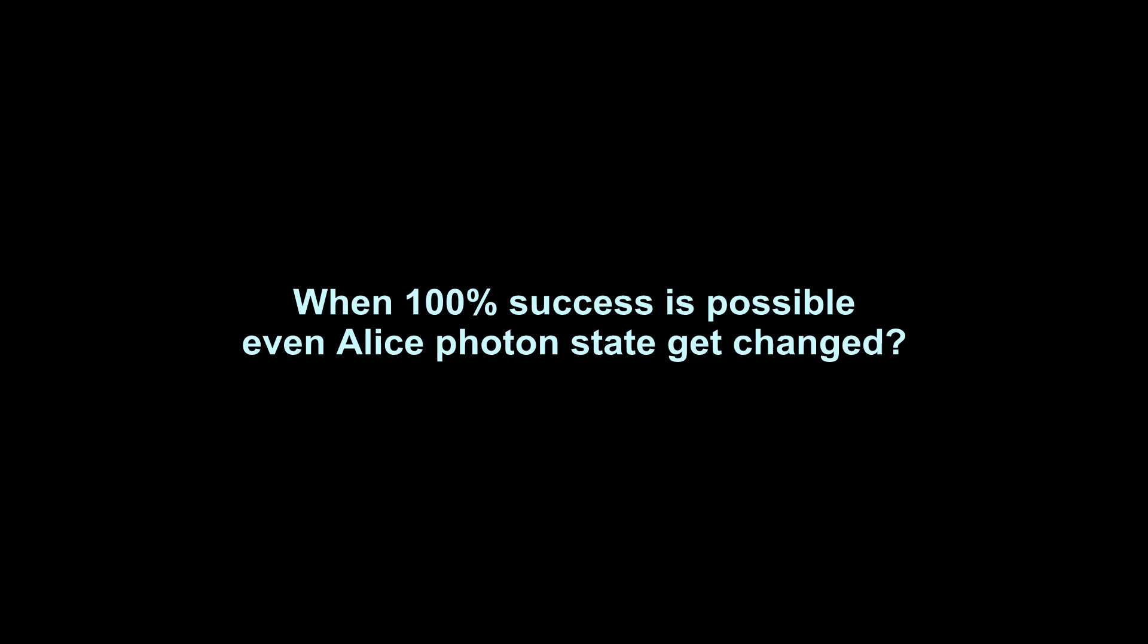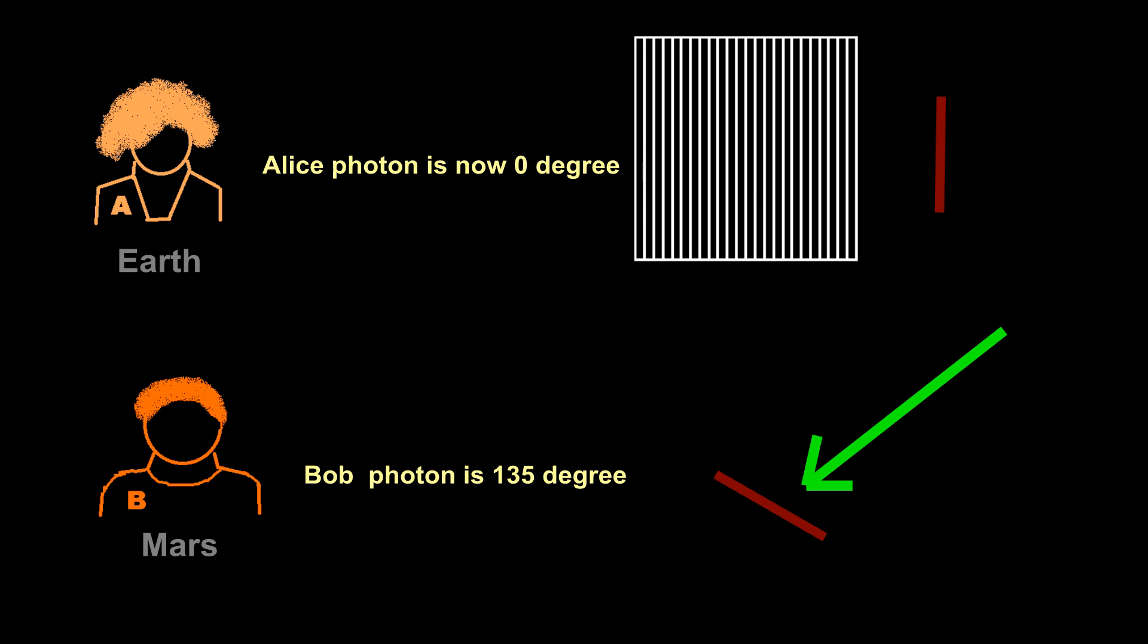But our test results are something different. We are always getting 100% success result while measuring with the exact opposite direction. When would 100% success be possible? Only when Bob's photon get changed according to Alice's photon get changed while measuring it. So the action at the distance is true. Albert Einstein's declaration is wrong. Really, entangled particles are communicating faster than the speed of light. Thank you.